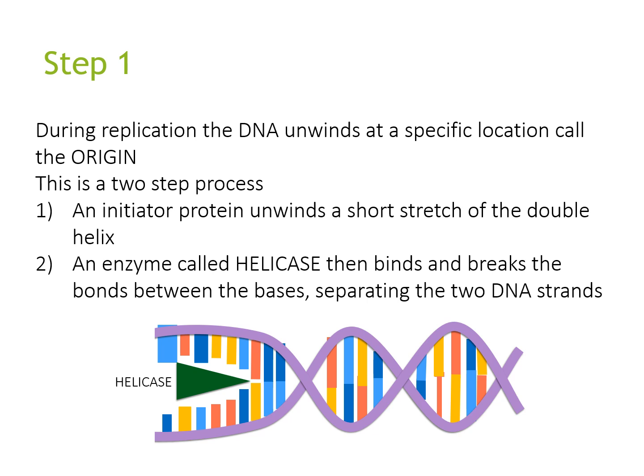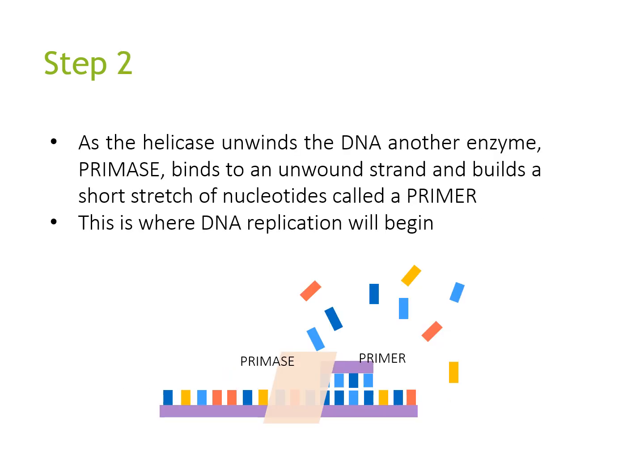During replication, the DNA unwinds at a specific location called the origin of replication. This is a two-step process. An initiator protein unwinds a short stretch of the double helix, and an enzyme called helicase then binds and breaks the bonds between the bases, separating the DNA strands. As the helix unwinds, another enzyme called primase binds to the unwound strand and builds a short stretch of nucleotides known as a primer. This is the point where DNA replication begins.